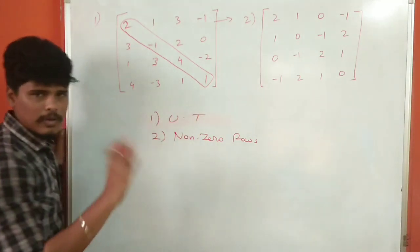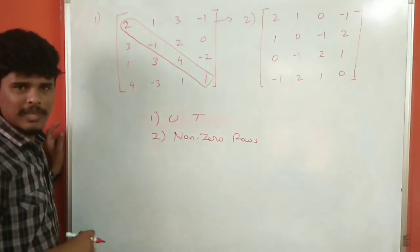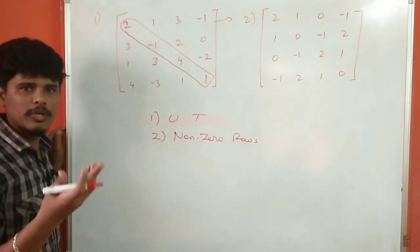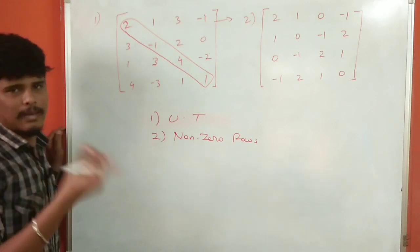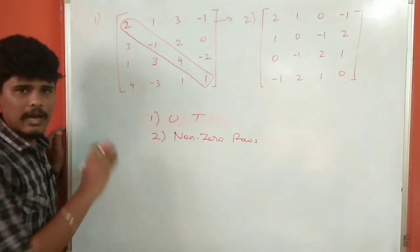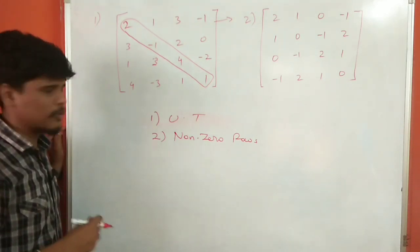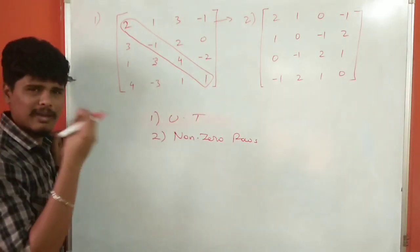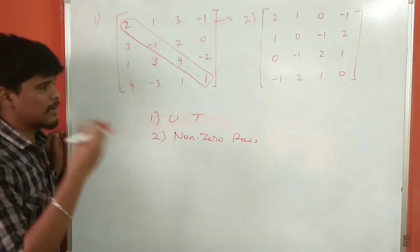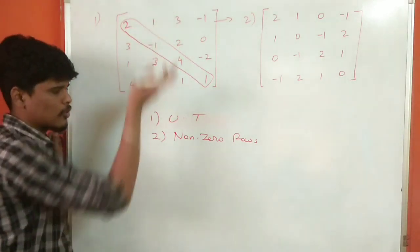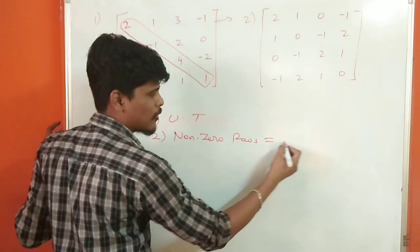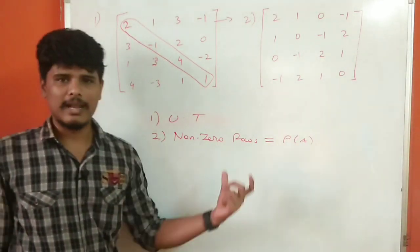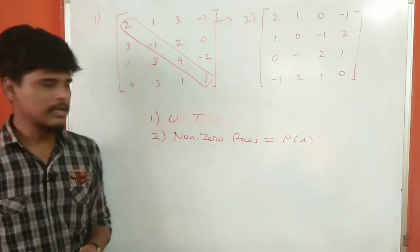If a row has all zeros, we call it a zero row. If a row has any non-zero values — like 2, 3, minus 5, or whatever — it is a non-zero row. The number of non-zero rows equals the rank of the matrix.